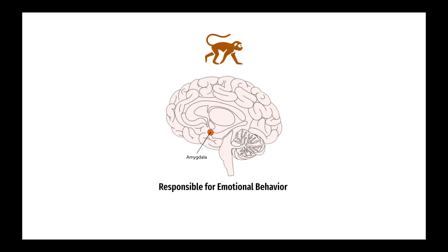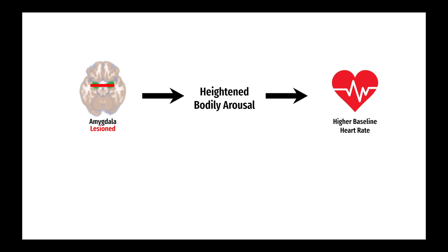Moreover, the researchers knew that lesioning the amygdala would create a heightened aroused state where the baseline heart rate would be higher. Once again, this mimics the increased arousal documented in people with different psychiatric disorders.